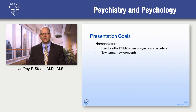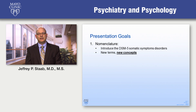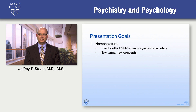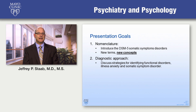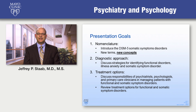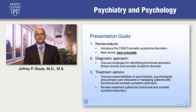We have a few goals for this presentation and the two that follow. I want to introduce the DSM-5 Somatic Symptom Disorders — a part of the manual that changed quite a bit from DSM-4. We also want to talk not just about the terminology, but about the concepts behind it, diagnostic approaches for identifying functional disorders, illness anxiety, and somatic symptom disorder, as well as treatment options and how these changes alter the role psychiatrists and psychologists can play in managing patients with enigmatic physical symptoms.